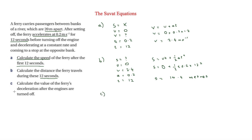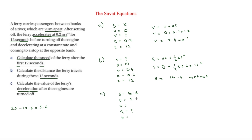Part C asks us to calculate the ferry's deceleration after the engines are turned off. We set up S, U, V, A, and T again, with A as the question mark. For S: the total distance is 20 metres and it has already covered 14.4 metres, so 20 minus 14.4 equals 5.6 metres remaining. U is now 2.4 m/s — the final velocity from Part A becomes the new initial velocity.